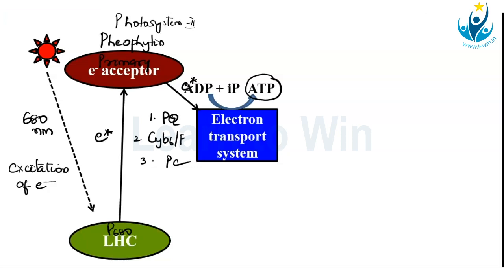Now by the time the electrons come out of the plastocyanin or the electron transport system, these electrons have already reached the ground state. And from there they are going to go to the second LHC, that is P700.